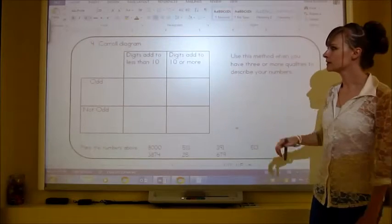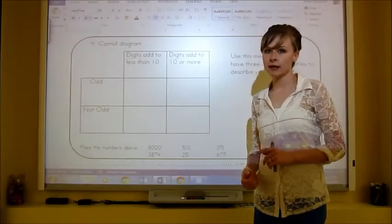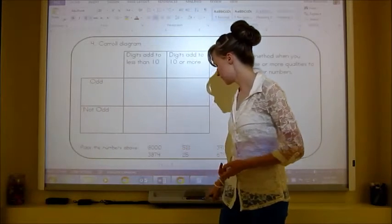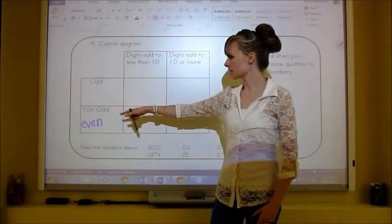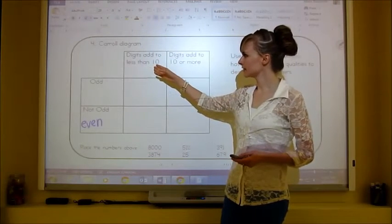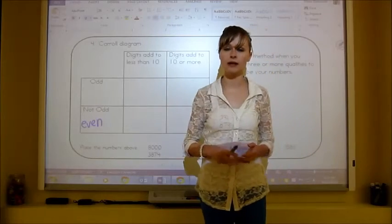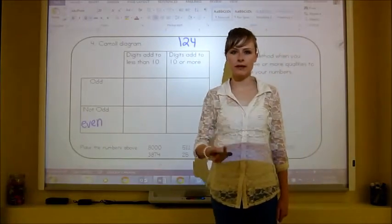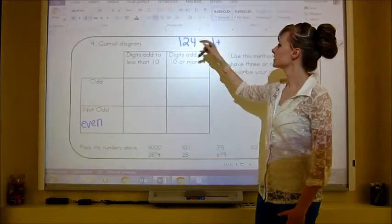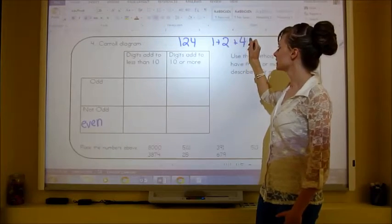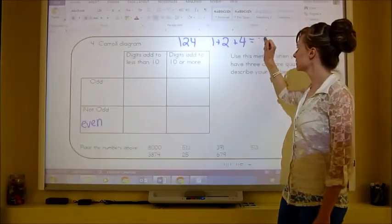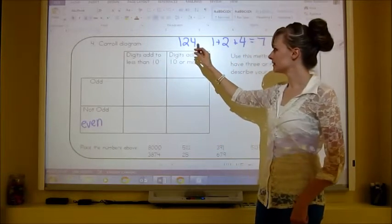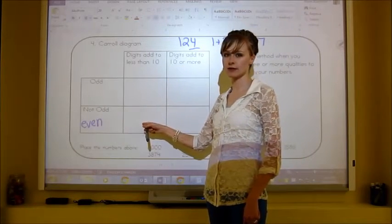Next up is the Carroll diagram. It has four categories: odd or not odd (even), and whether the digits add to less than 10 or more than 10. To find the digit sum, add all digits together — for example, 1 + 2 + 4 = 7 for the number 124, which is less than 10 and even, so it would go in that box. 8,000: digits add to 8 (less than 10), and it's even — so 8,000 goes in the even/less-than-10 box.